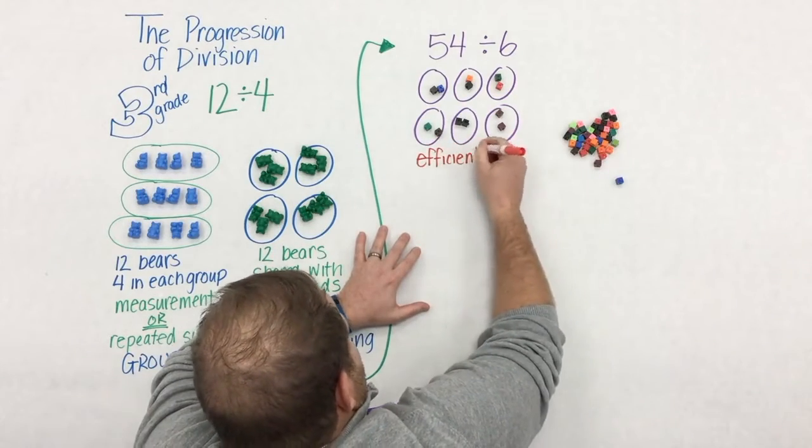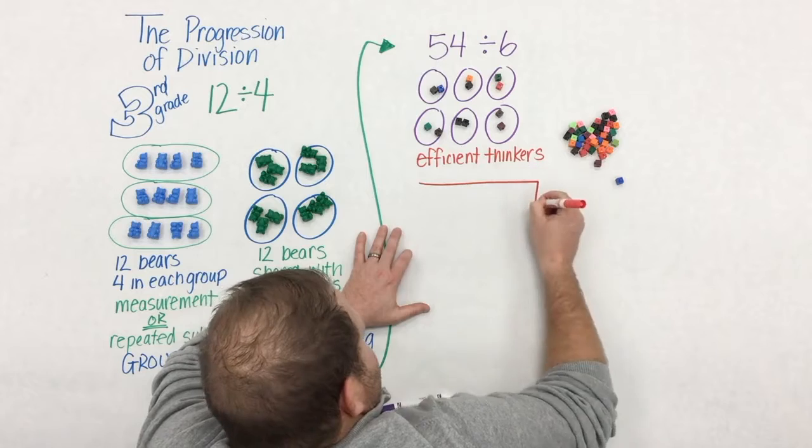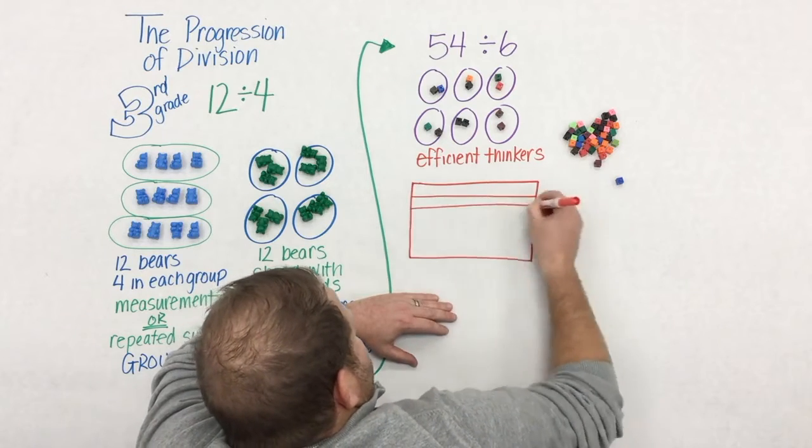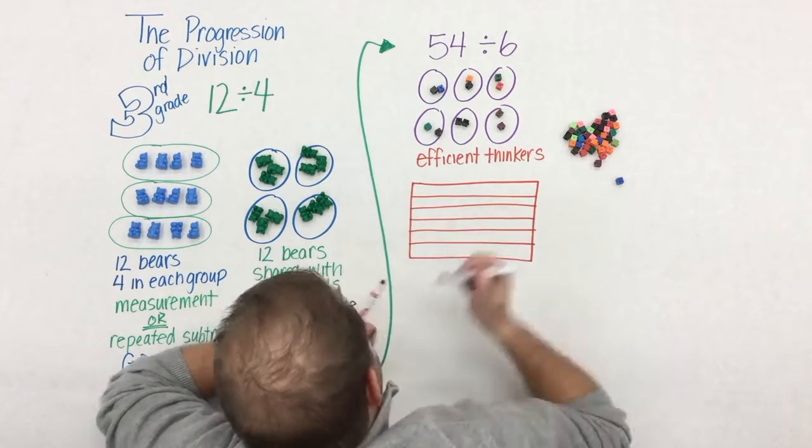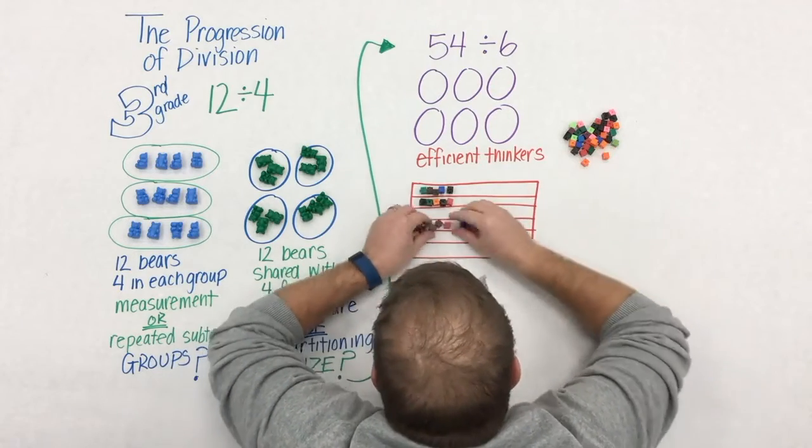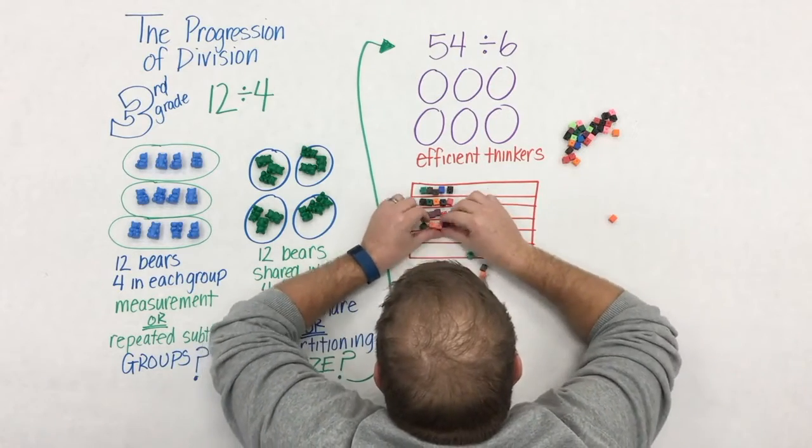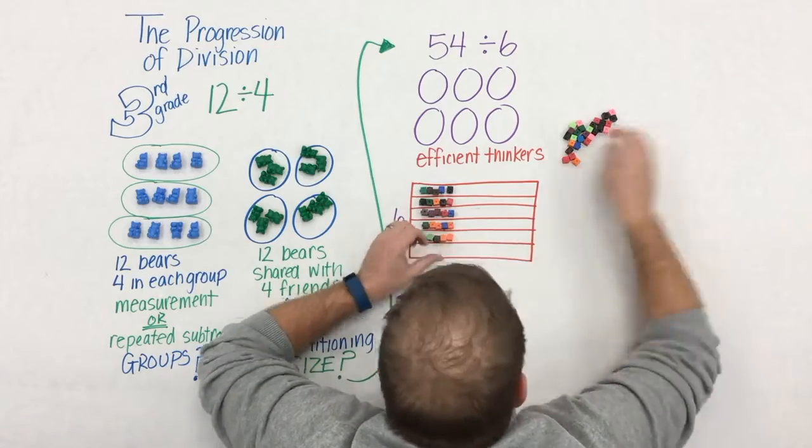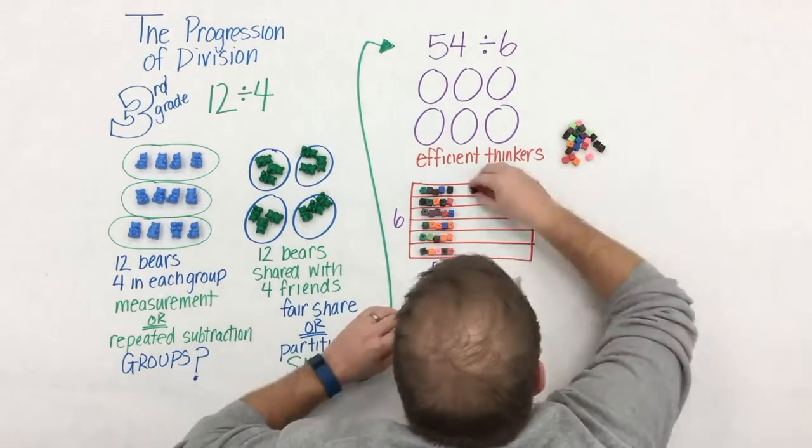But 54, that's going to take a long time using fair share. So we need to put students in a place where they begin to become more flexible and efficient thinkers. So they might begin, instead of doing one by one, they might say, I'm going to take out five and put five in each group to start.